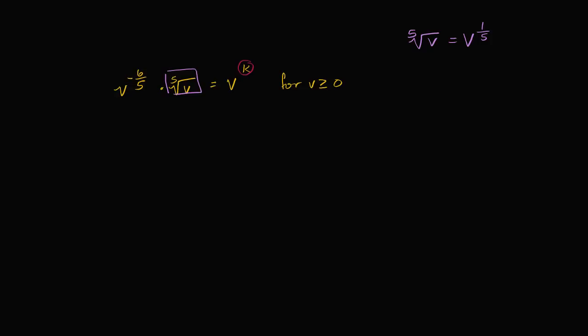So this is going to be the same thing as v to the negative six-fifths times, instead of saying the fifth root of v, I can say v to the one-fifth power is going to be equal to v to the k power.